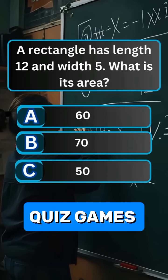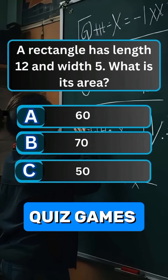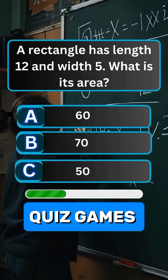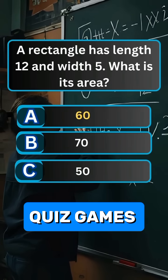Question 6. A rectangle has length 12 and width 5. What is its area? Answer A. 60.